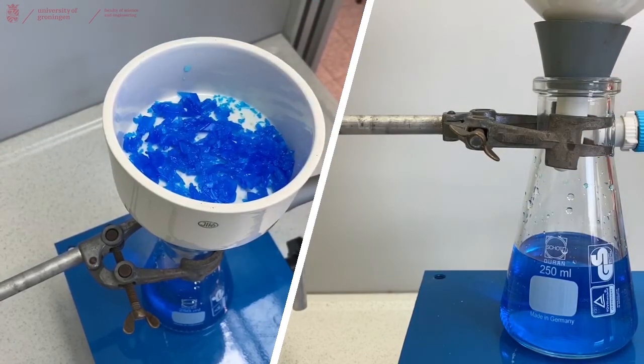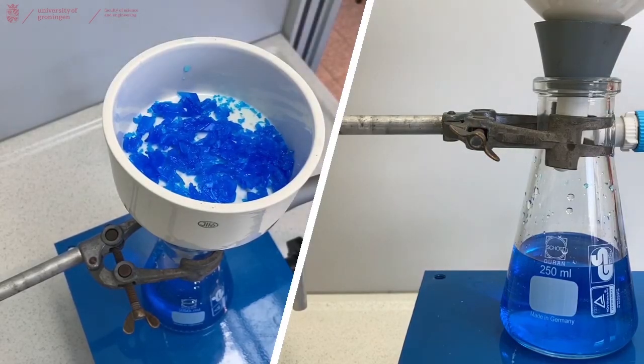When your crystals are dry, you can continue with the rest of your experiment and analyze them for purity and melting point. This is how you perform a vacuum filtration.